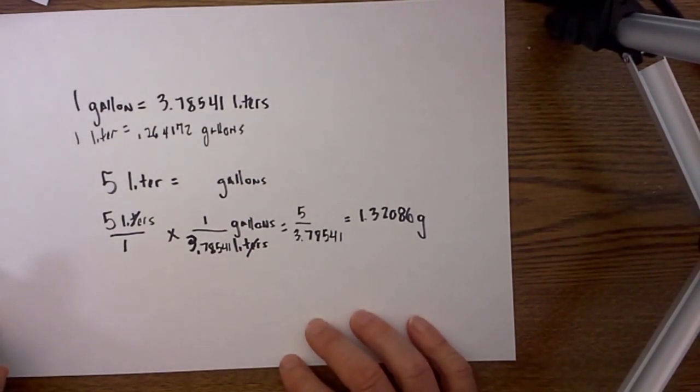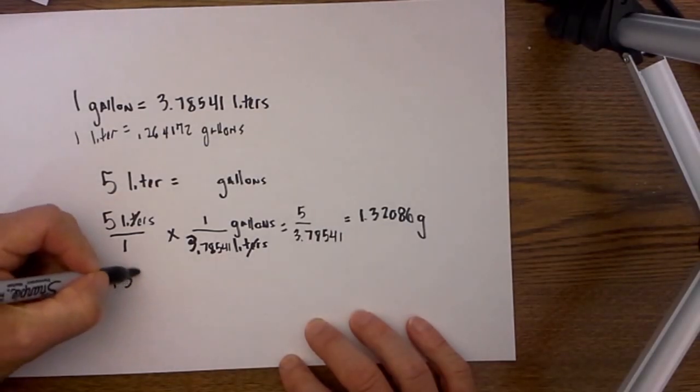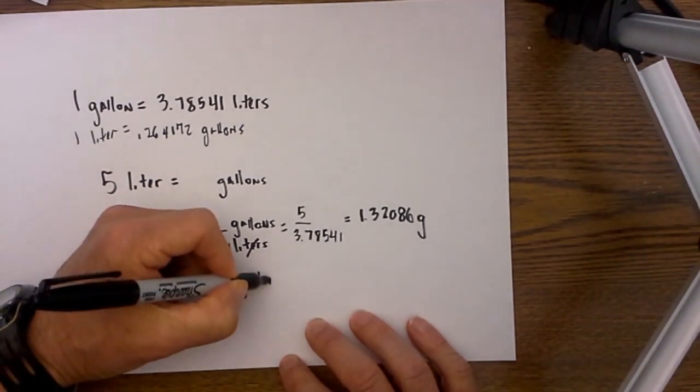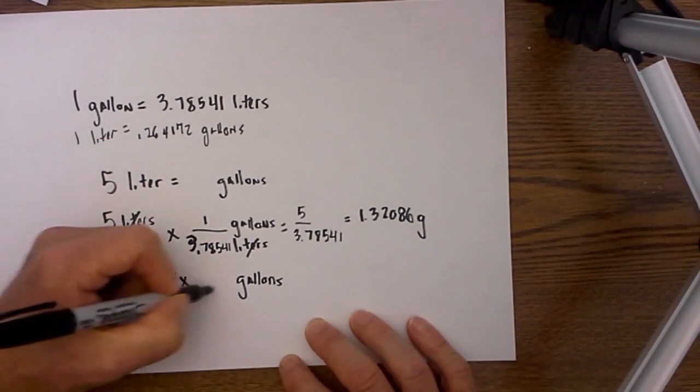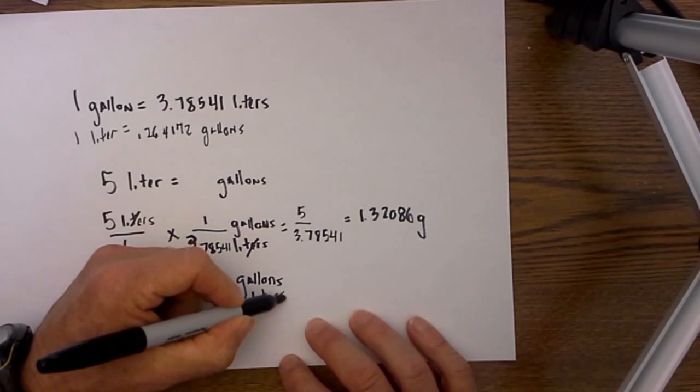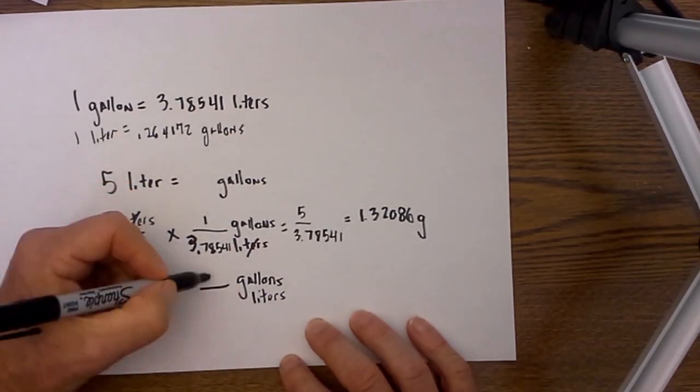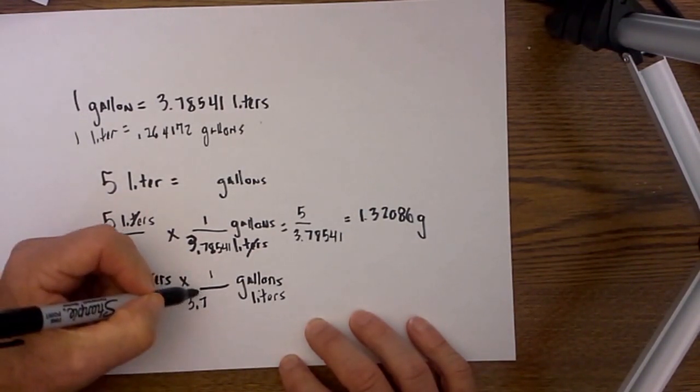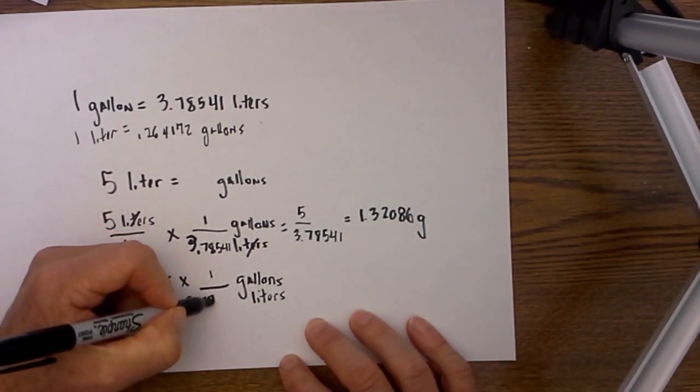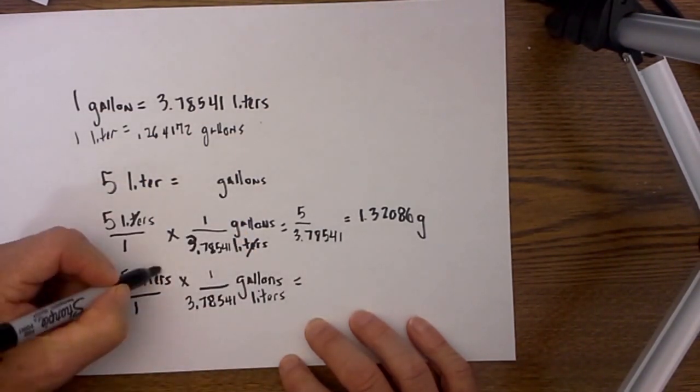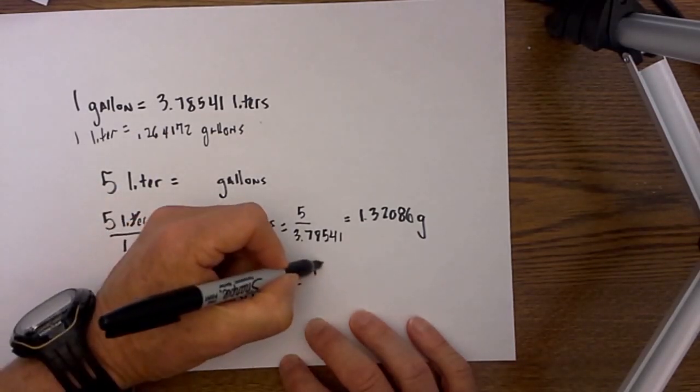This time, let's go with 15 liters is equal to how many gallons. So I will put gallons on top, place this over 1, then put liters on the bottom. I always ask myself which is larger, gallons or liters. Gallons are larger, then I put 1 gallon is equal to 3.78541 liters. The liters cancel and then I multiply straight across.